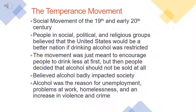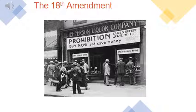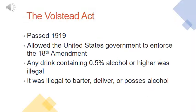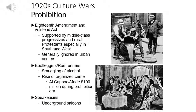The 18th Amendment to the Constitution all but outlawed consumption of liquor in the United States. The Volstead Act, passed in 1919, allowed the government to enforce the 18th Amendment, citing that any drink containing 0.5% alcohol or higher was illegal, and that it was illegal to barter, deliver, or possess alcohol. And thus began the culture wars of the 1920s — prohibition supported by middle-class progressives and rural Protestants, especially in the south and west, though it was generally ignored in urban centers.